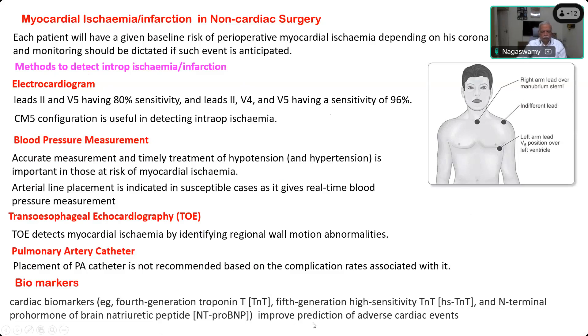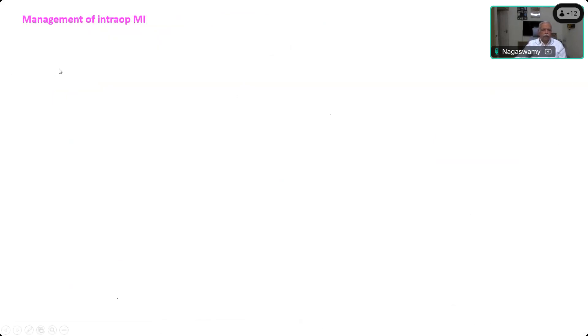Serial testing of troponins and broader markers should be performed. Regarding BNP and NT-proBNP values, the correct unit is nanograms, not milligrams — please verify this. That is how you detect intraoperative myocardial infarction.